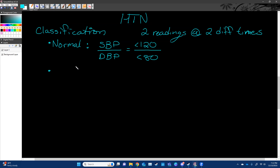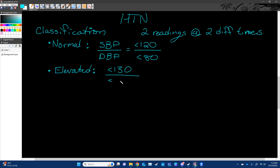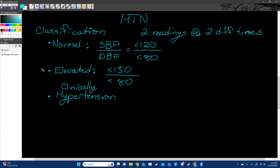People with white coat anxiety — where their blood pressure is elevated because they're scared of the doctor — wouldn't necessarily be put on blood pressure medication. Sometimes you can have the nurse take their blood pressure while they're sitting in the office or even out in the lobby. Elevated blood pressure is when we are getting above the 120 range but specifically below 130 and below 80, so we're seeing an increase in systolic blood pressure.